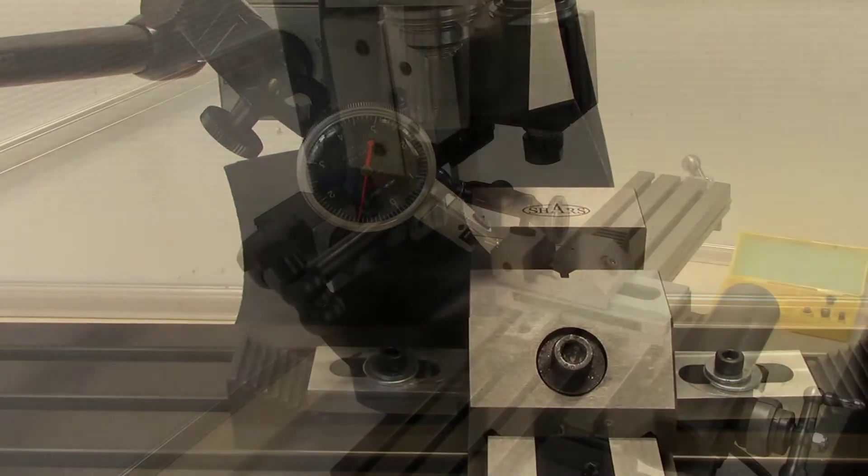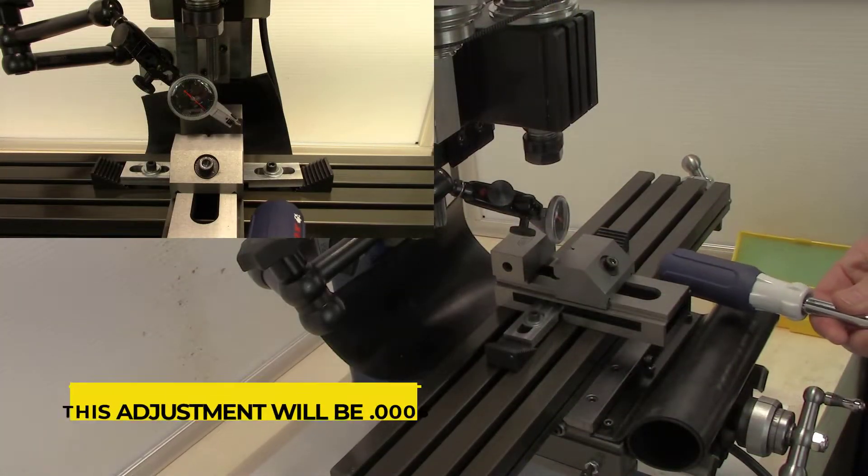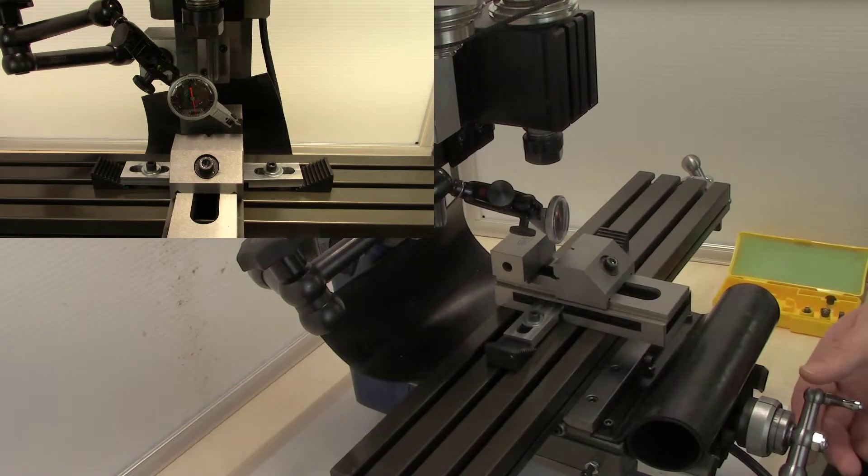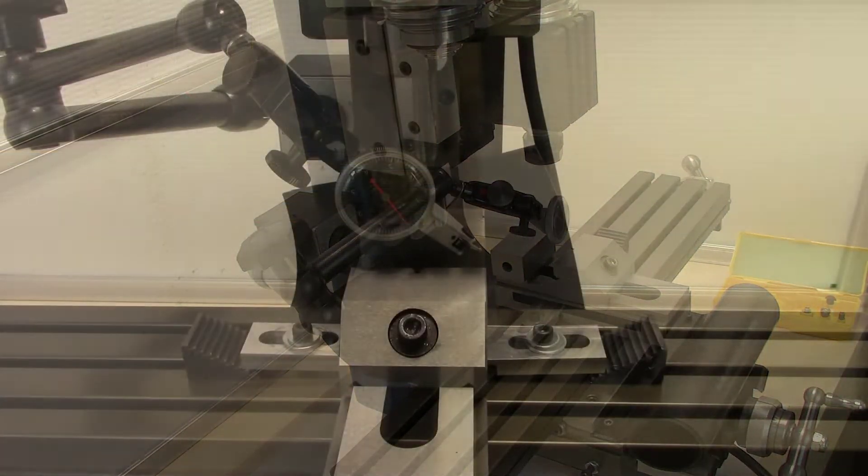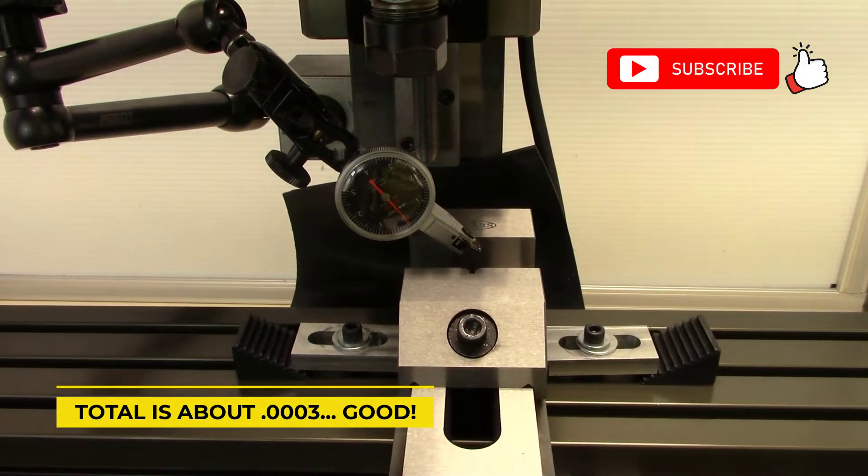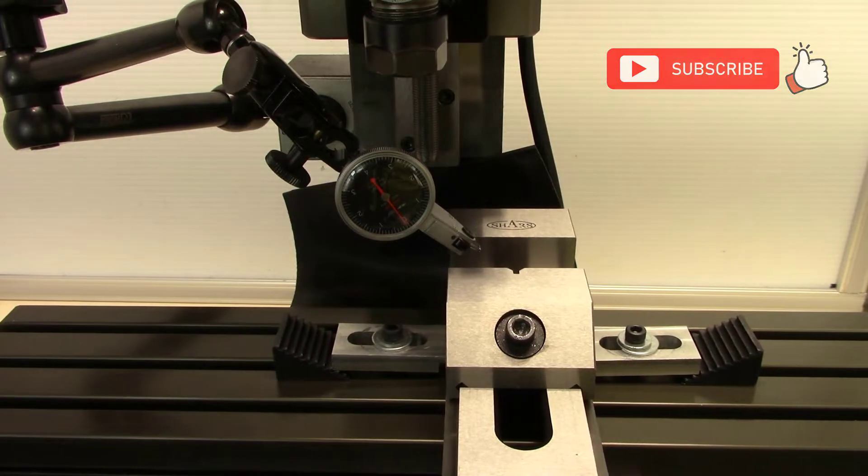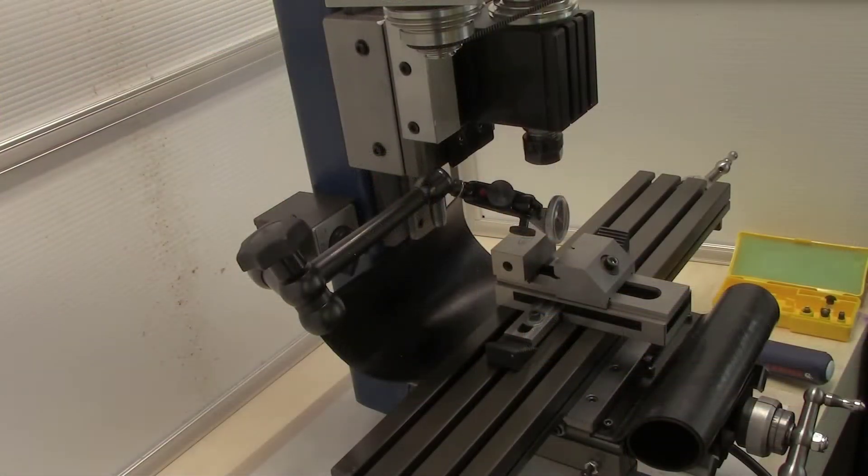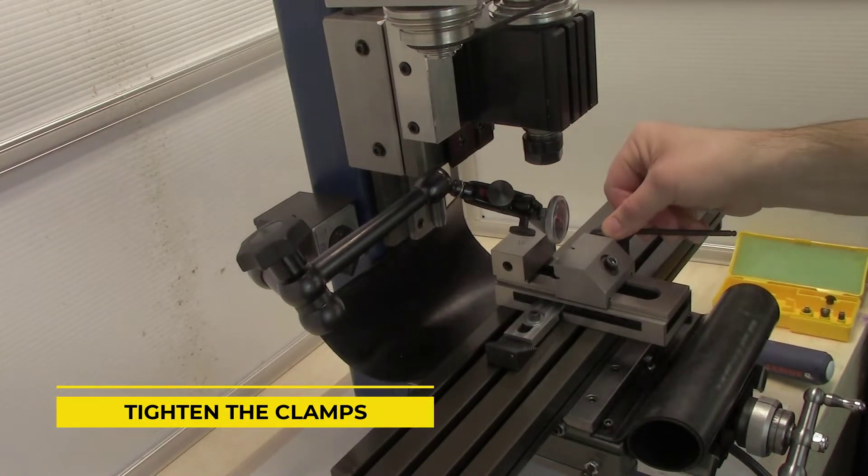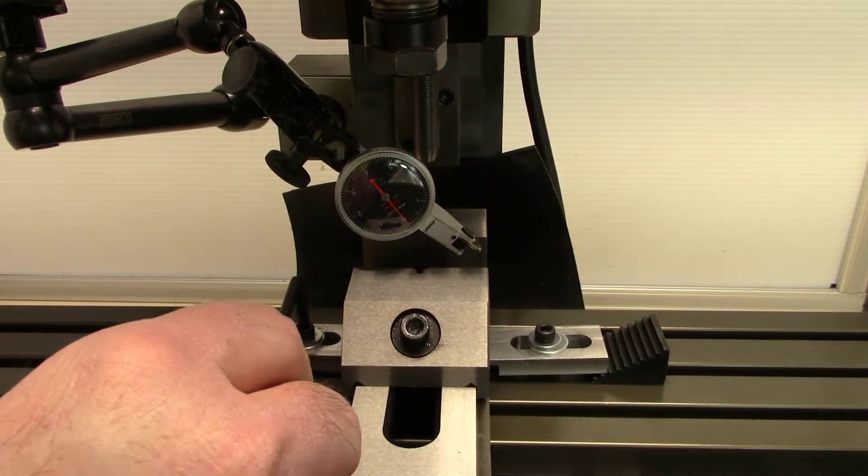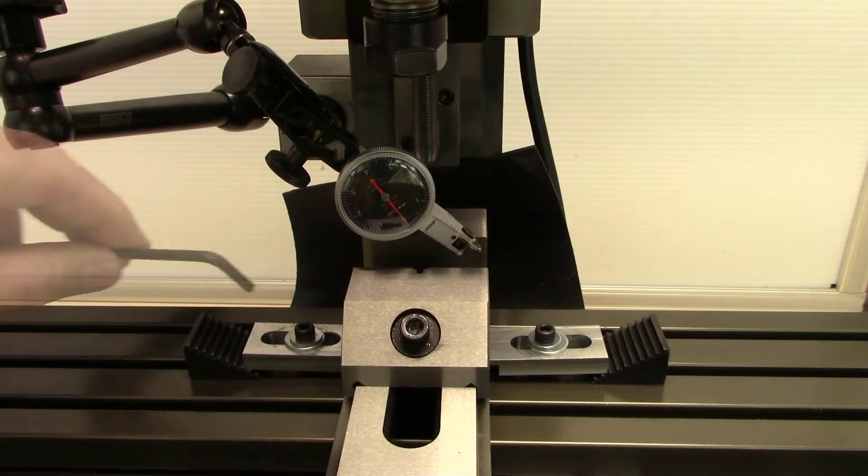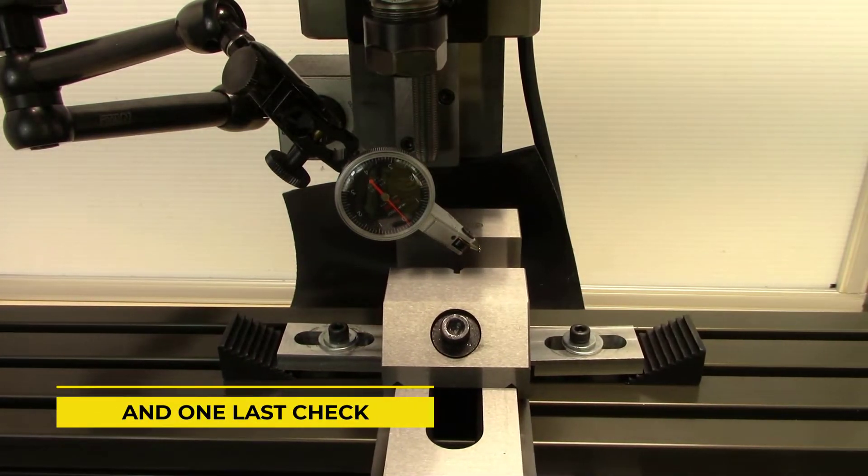Here we are one thou three tenths out so we'll need to make an adjustment of six tenths. We'll go ahead and sweep the face on the x-axis. Our measurement looked good so we'll go ahead and tighten our clamps. We'll go ahead and take one last reading.